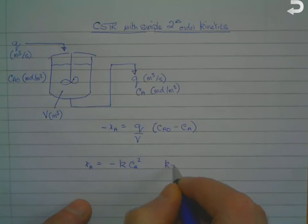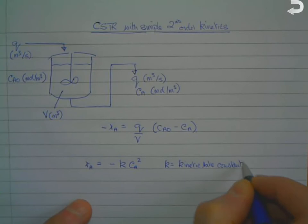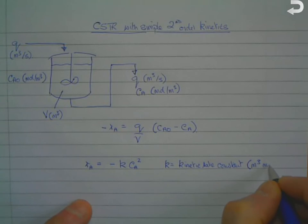We've got K, which is the second order kinetic rate constant, and because that's second order it has units of meters cubed moles to minus one seconds to the minus one.